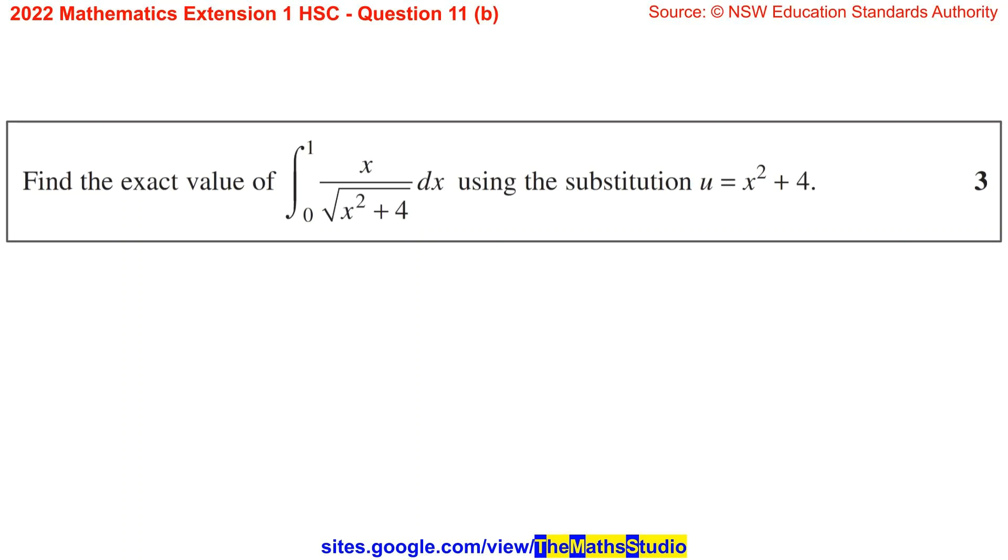Question 11b. Find the exact value of the integral from x equals 0 to x equals 1 of x over the square root of x squared plus 4 dx using the substitution u equals x squared plus 4.